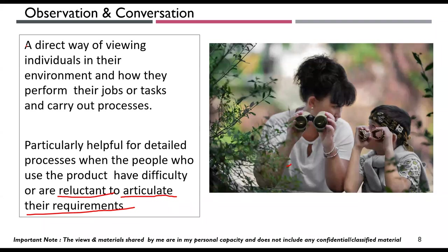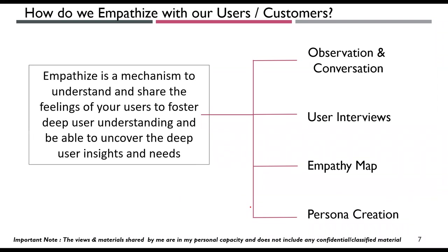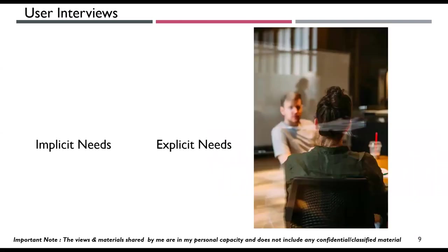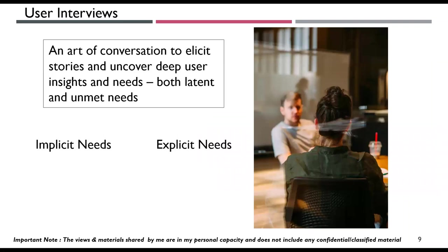These are the observation and conversation techniques. There are many other empathizing techniques — at least 10 to 15 more — but I've picked the important ones. The second technique is user interviews: it can be one-to-one or one-to-many. You bring them in a group and try to understand their current needs, unmet needs, problems they face, and gaps in the current system.